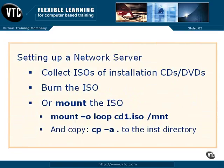Once you collect the ISO files that represent the CDs and/or DVDs, you could burn the ISO files using a tool like GNOME Maker or K3B, or even a Microsoft-based tool such as Nero or Roxio. Alternatively, you could just mount the ISO file. For example, if the first installation CD is downloaded with the file name CD1.ISO, you could use the mount command shown here to mount that ISO, and then run the cp -a command to copy all the files, including the hidden files, to the installation directory.